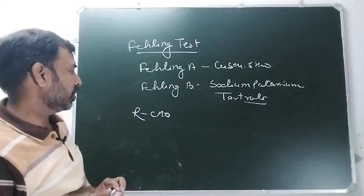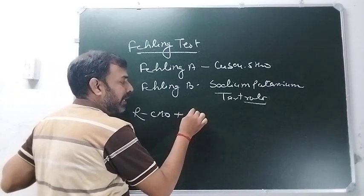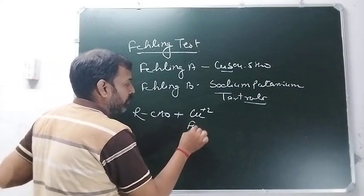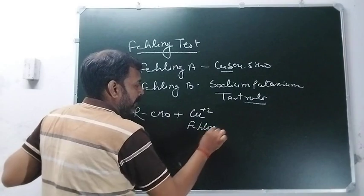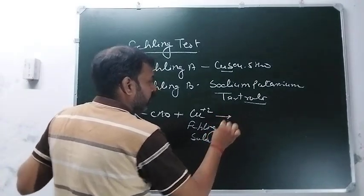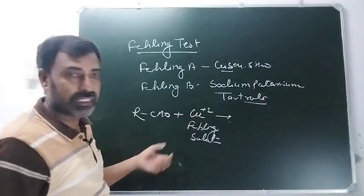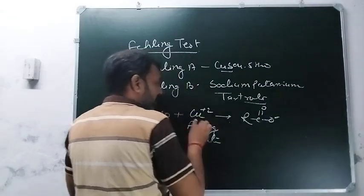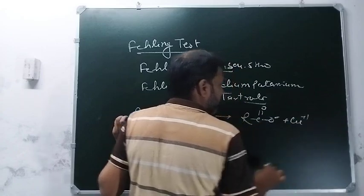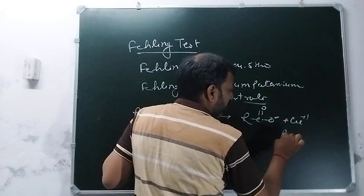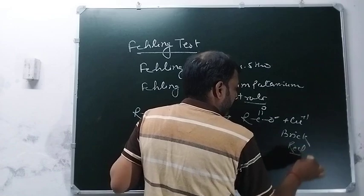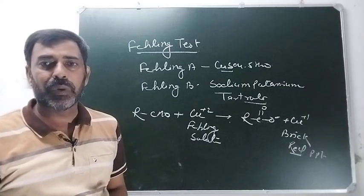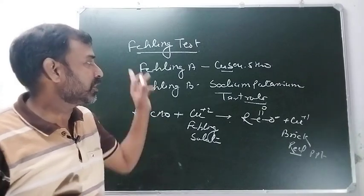इस navy blue color में जब आप aldehyde डालेंगे और mix करेंगे Cu²⁺ (copper sulfate representing Fehling solution) के साथ - तो इसका oxidation होगा। Cu²⁺ is not a very stable salt। यह बन जाएगा RCOO⁻ और इसका reduction होगा - यह बनाएगा Cu⁺। और यह जो Cu⁺ होता है, इसका color होता है brick red। So if brick red precipitate is forming, it means your compound is an aldehyde। अगर brick red precipitate नहीं बन रहा तो compound aldehyde की category में नहीं आता।